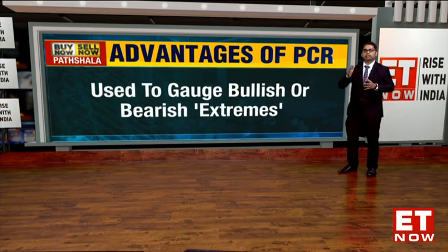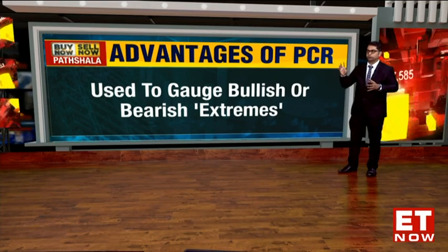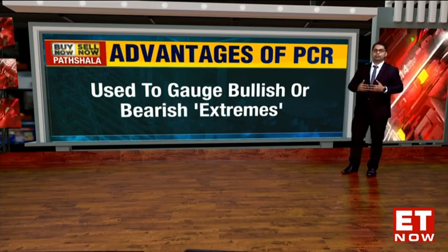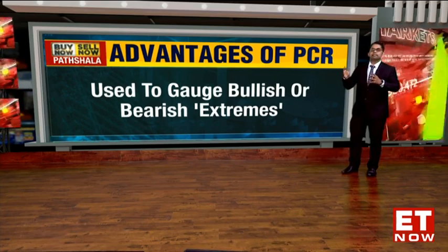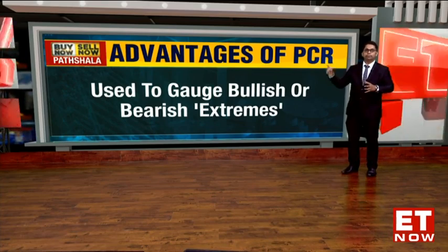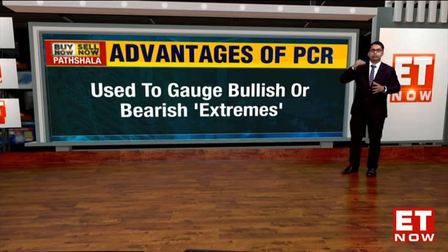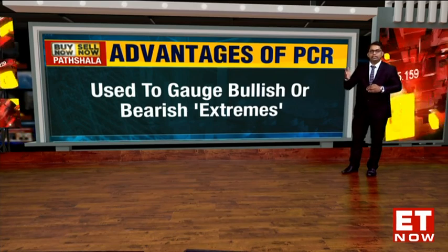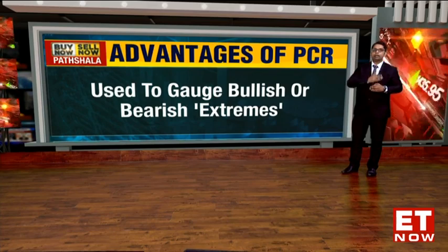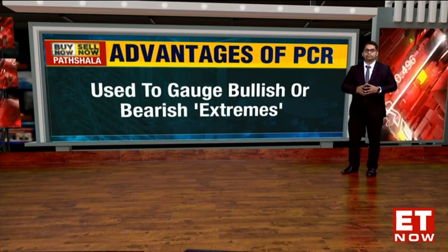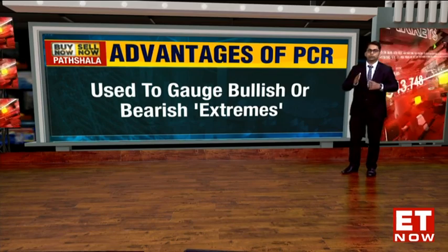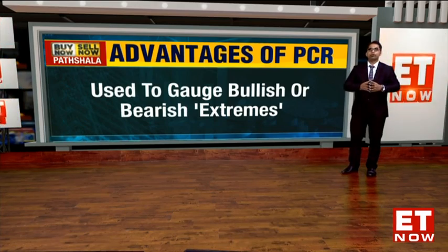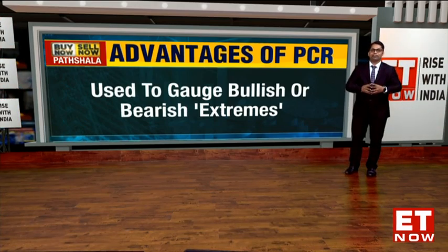That's an indication that the markets will probably get into a frothy kind of zone. Typically, the basic advantages of put-call ratio is that it helps to find out those extreme zones. On the upside it is approximately 1.6 for the Nifty, and on the downside it is closer to 0.5 to 0.6. Any put-call ratio above or below these extreme points is a very good opportunity to become a contrarian trader.